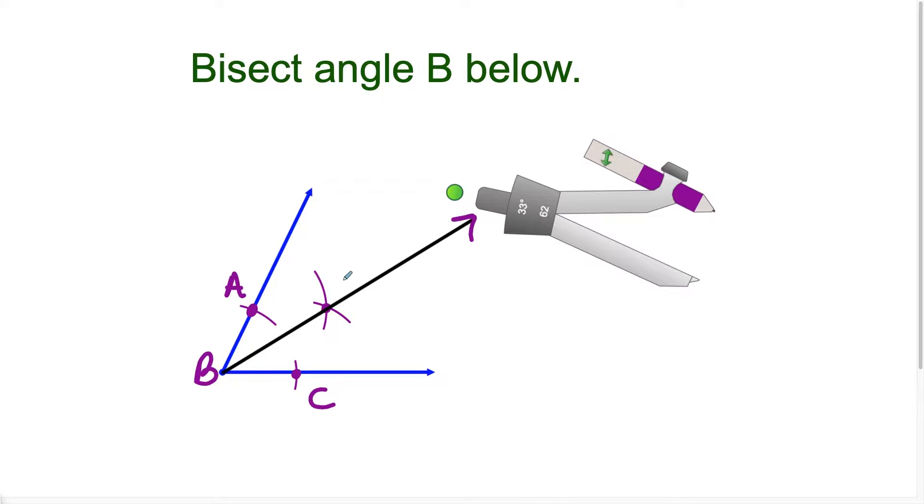If I name this point D, I can conclude that angle ABD is congruent to angle CBD. We'll just throw our symbol in here. These two angles are equal in measure.